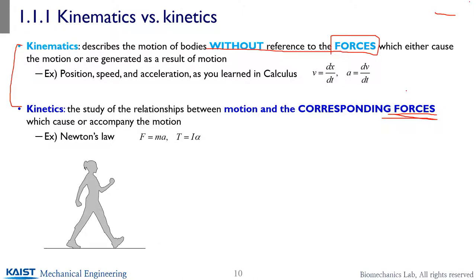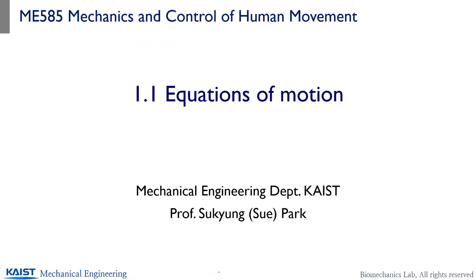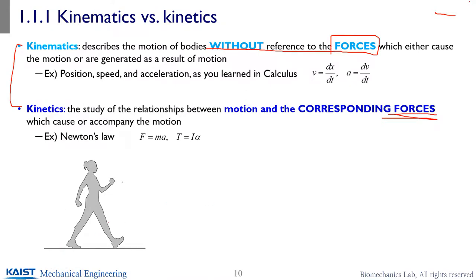Once you obtain the position, you just take the derivative to obtain the velocity. However, for kinetics, you want to know the relationship between the motion and the corresponding forces. So joint forces and joint torques are the topics you are interested in. Mostly when handling kinetics or dynamics, the kinematics chapter precedes, because in the kinetics chapter we learn F equals MA — the dynamics. So F equals MA or torque equals I alpha. But without knowing how to formulate the acceleration — linear or angular — you can't proceed, so most dynamics textbooks put kinematics before kinetics.